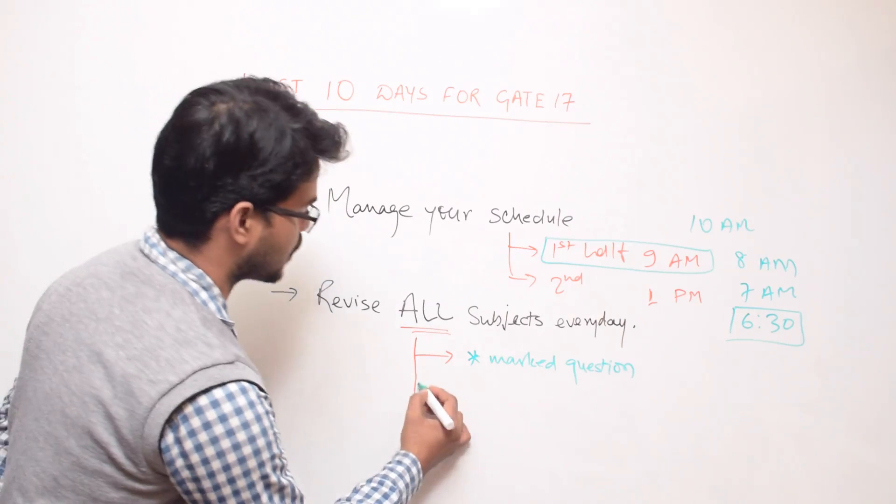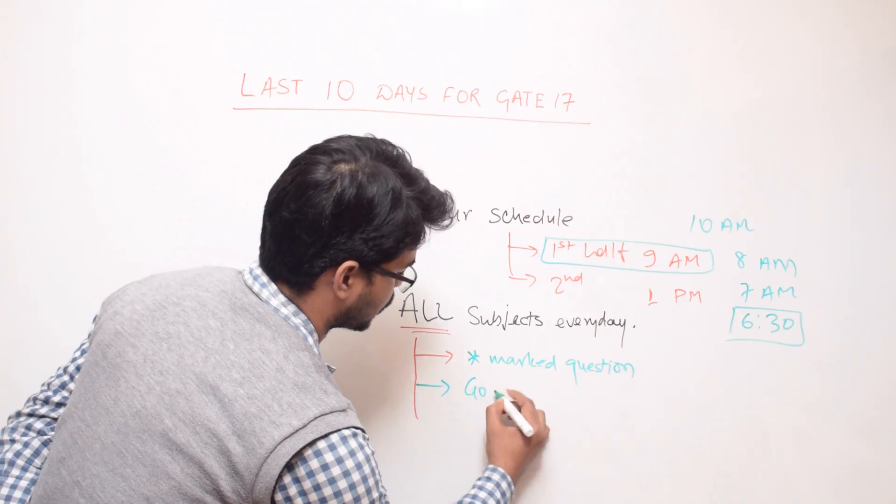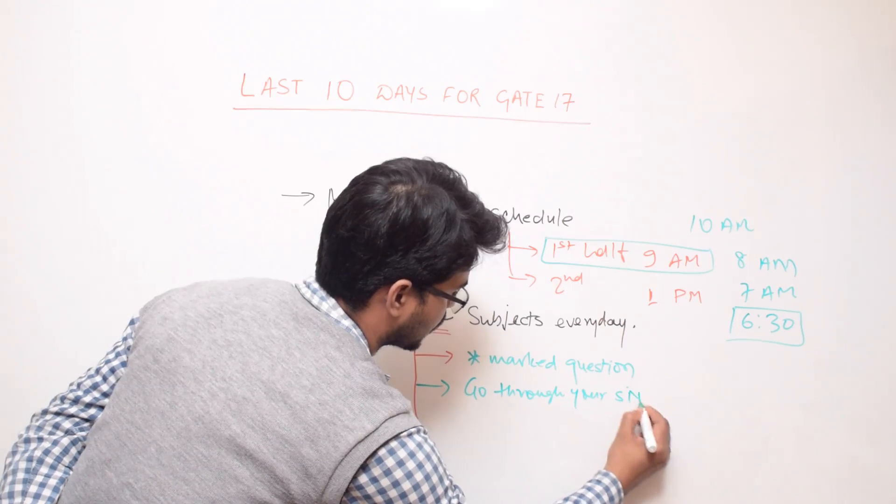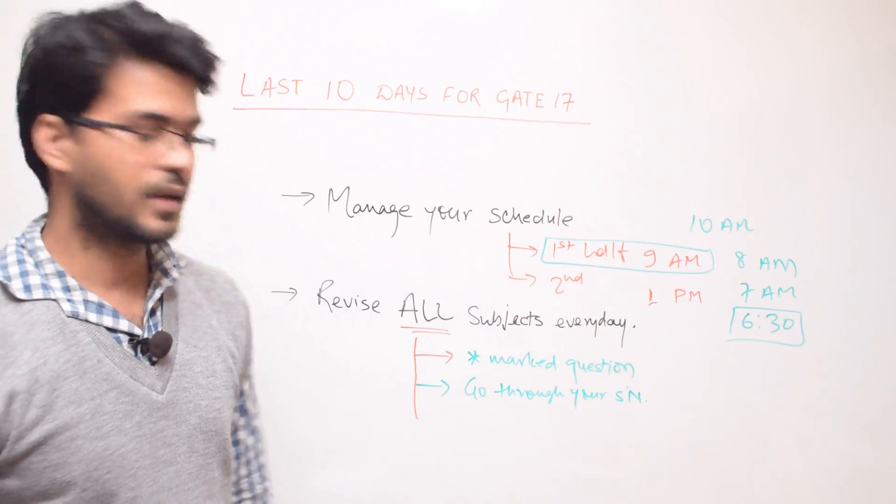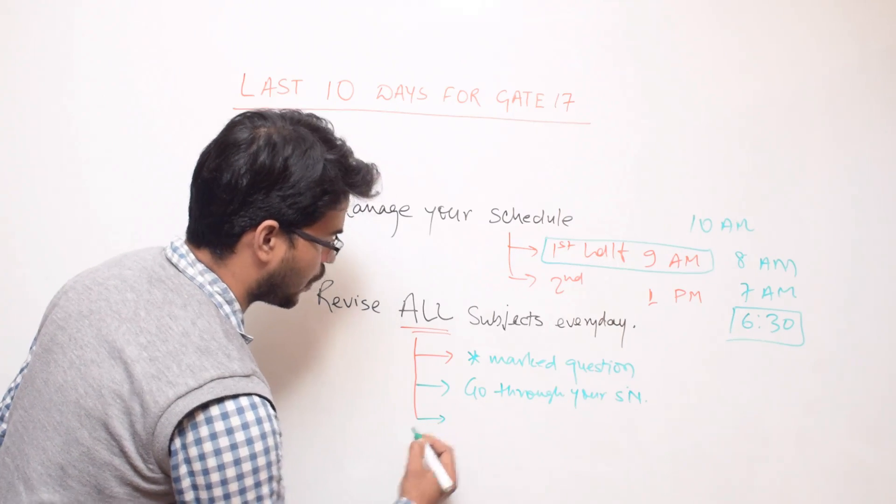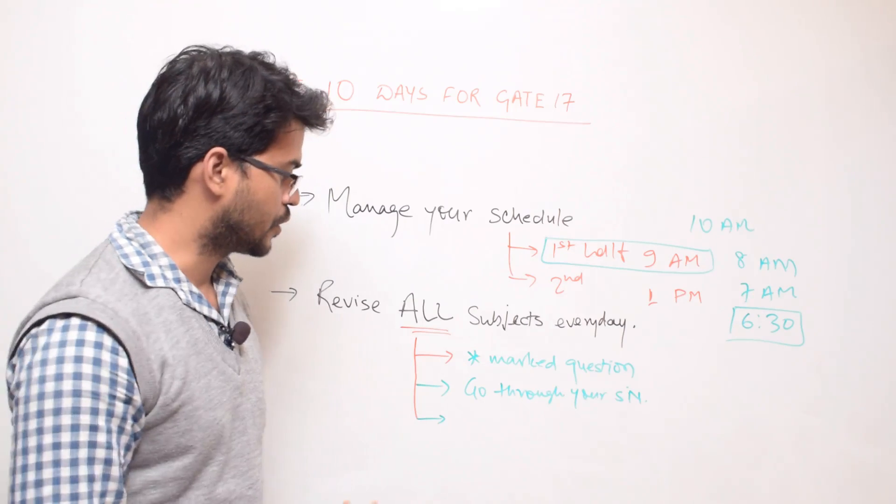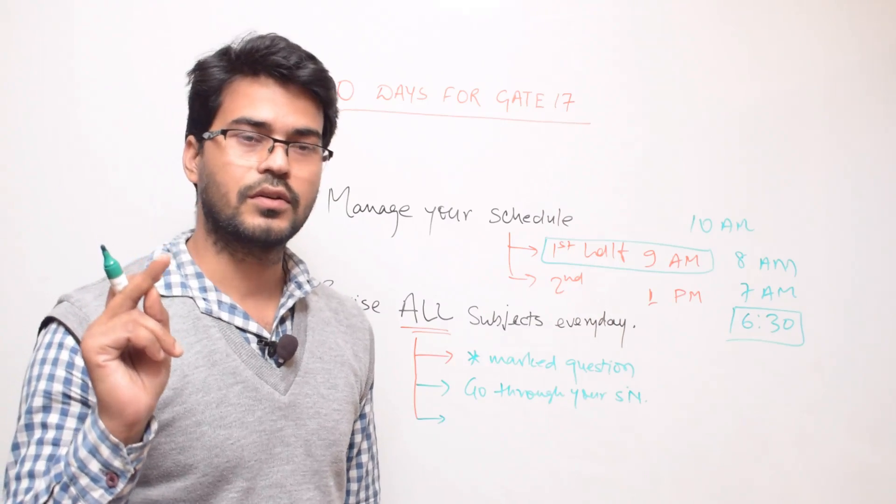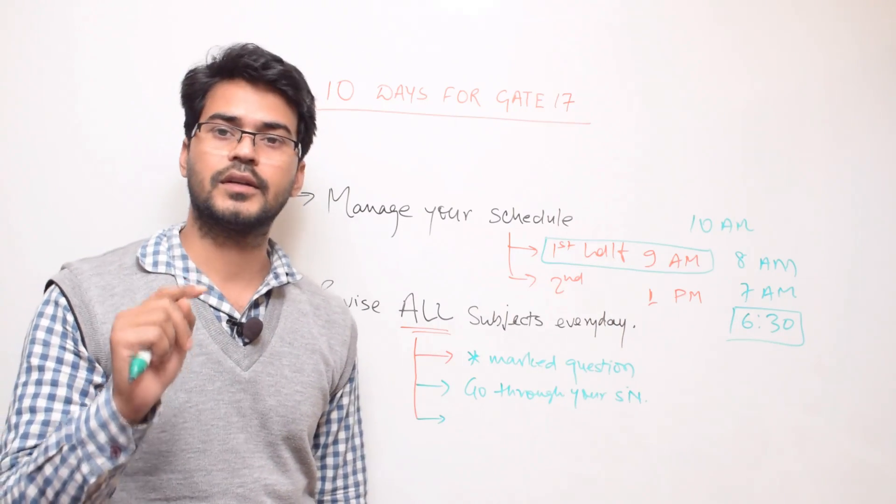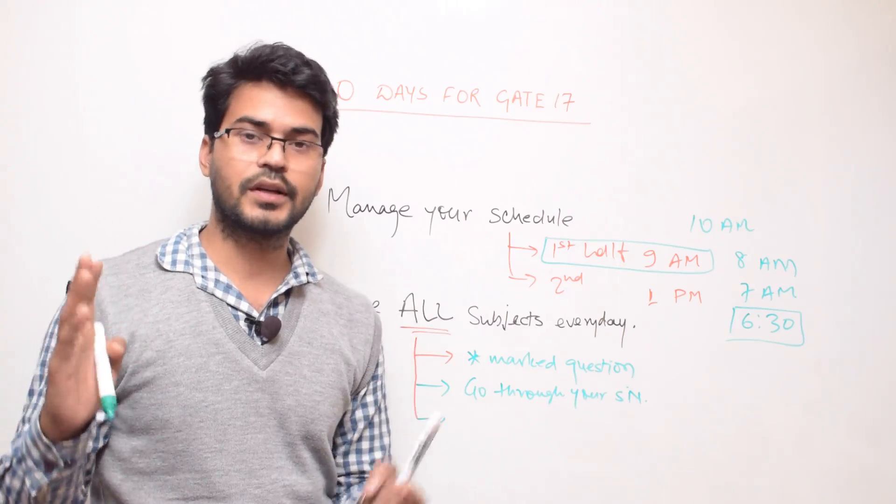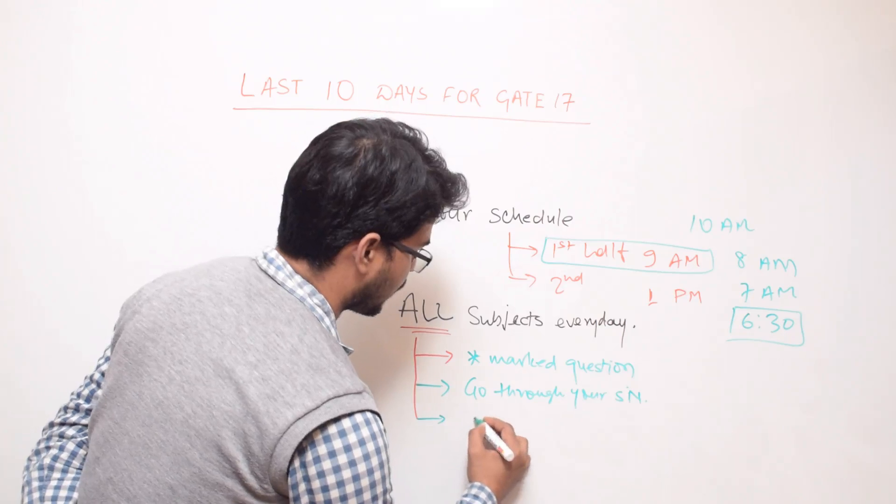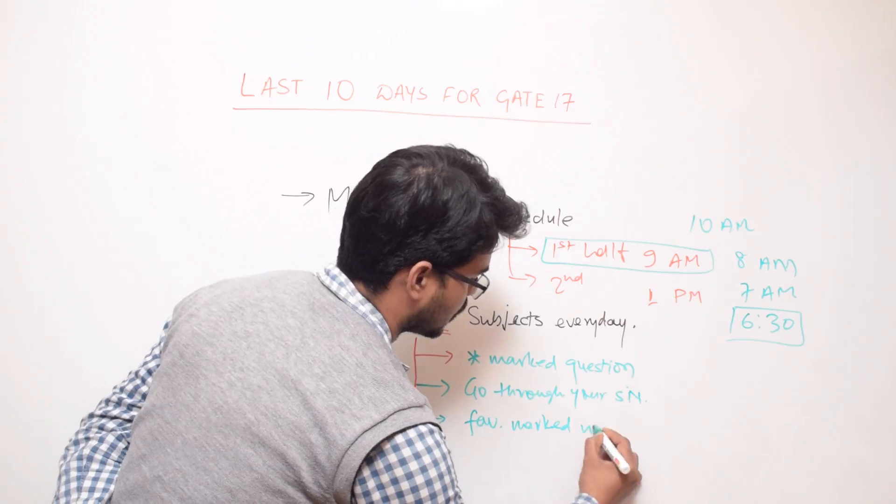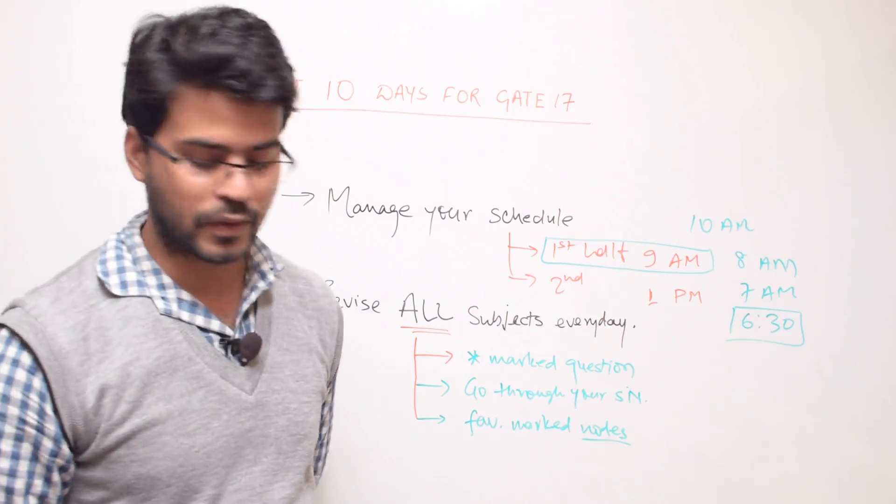Second is go through your short notes every day. Now of course you can do is if you are a regular Tector user, you must have a habit of bookmarking the topic which you liked. So you have an option to bookmark or mark a topic or chapter or particular content as a favorite. So go through those favorite marked nodes - when I say nodes it's individual content.